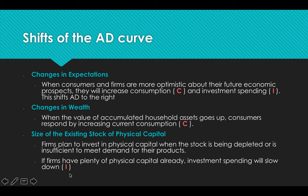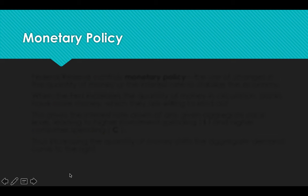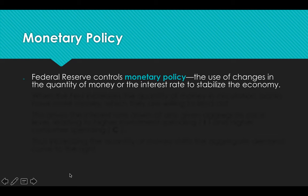If there is slow demand or firms have enough capital, investment spending will slow down. Monetary policy — we're going to go into much more detail in Unit 4, but some basics will be covered here. Monetary policy is controlled by the Federal Reserve, which controls the size of the money supply in order to affect the interest rate. This is another way to stabilize the economy. We have fiscal policy, which is Congress and the President, and then we have monetary policy, which is the Federal Reserve.